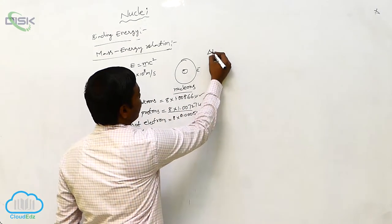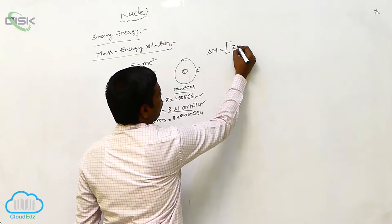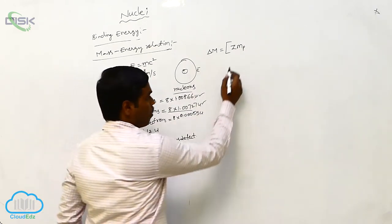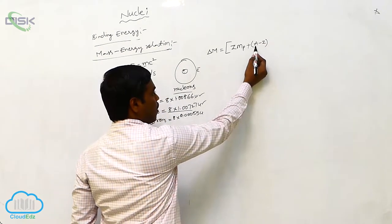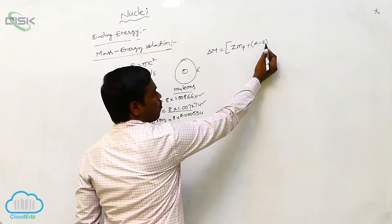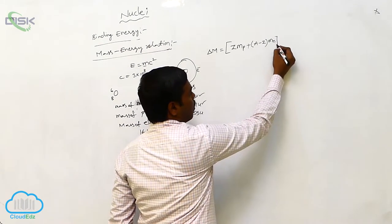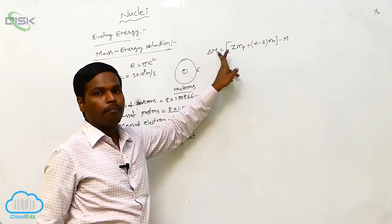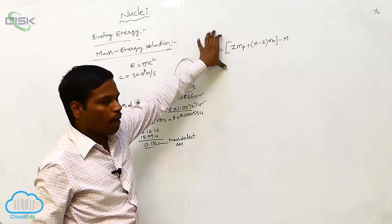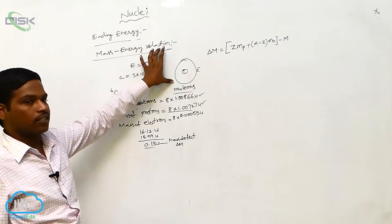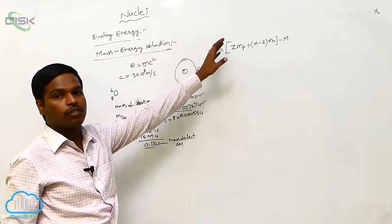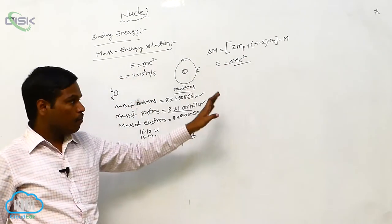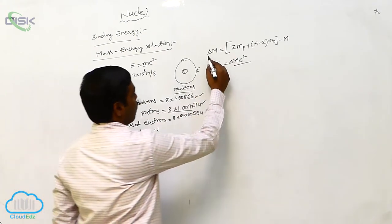The mass defect delta-m is given by: Δm = Z·m_p + (A−Z)·m_n − M, where m_p is the mass of the proton, Z is the number of protons, (A−Z) gives the neutron number, and M is the actual mass of the element. According to the mass-energy relation, this mass defect also corresponds to an energy given by E = Δm·c².